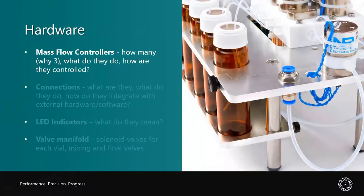Before we get into setting up the system and using it, we first need to go over what components make up the Olfactometer and what role they play. One of the most important parts of the system are the mass flow controllers. I'll talk about why there are three, what they do, and how they are controlled.